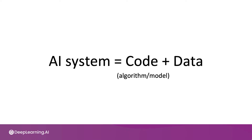There's been a lot of emphasis in the last several decades on how to improve the code. In fact, a lot of AI research grew up with researchers downloading datasets and trying to find an algorithm or model that does well on the dataset. But for many applications, you have the flexibility to change the data if you don't like it.